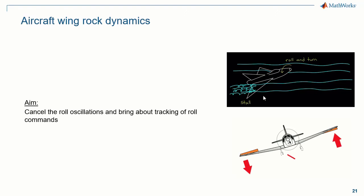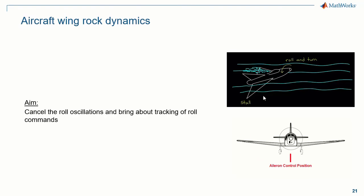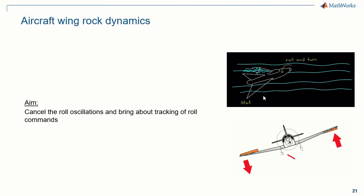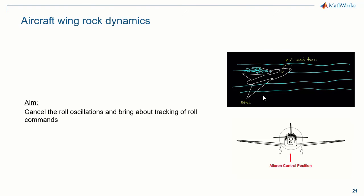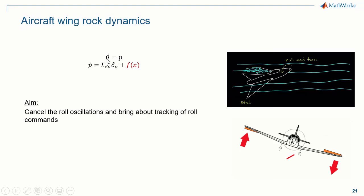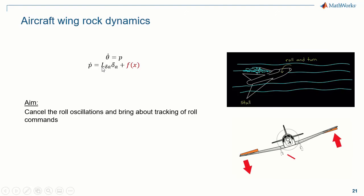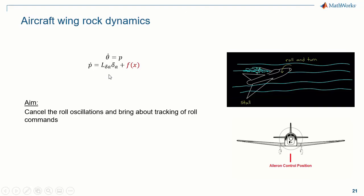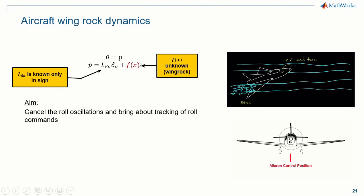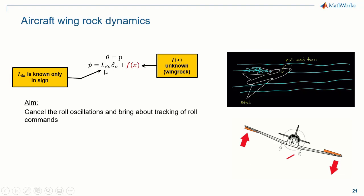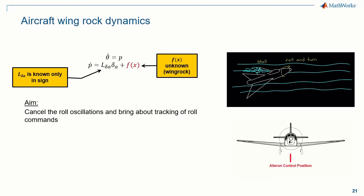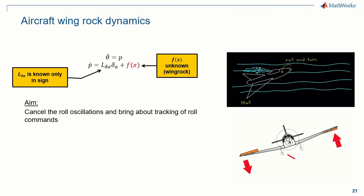The objective is to design a controller that can cancel these undesirable roll oscillations and bring about tracking of roll commands given by the pilot. Looking at the simplified roll dynamics of the aircraft, the state variables are theta (the roll angle) and p (the roll rate). The delta_A is the aileron input and L is the control effectiveness matrix. In this scenario, we have parts of the dynamics which are unknown — f(x) is the wing rock dynamics — and the control effectiveness matrix is only known in sign. We are in a situation with unknown and uncertain dynamics.